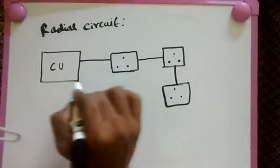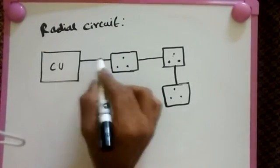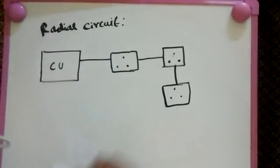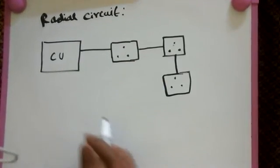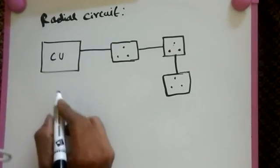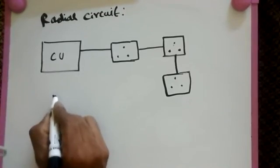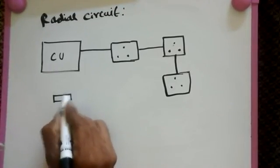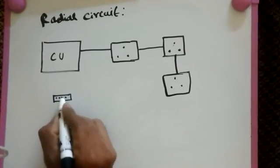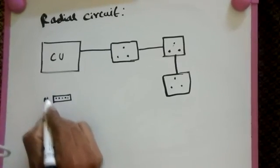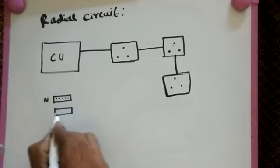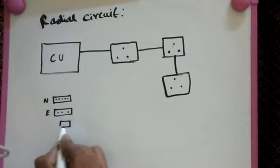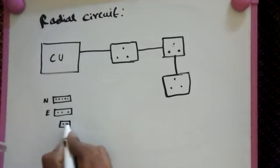This is for a single line. How is this connection made? Let's see how the internal wiring is made. Here we have neutral, earth, and line.